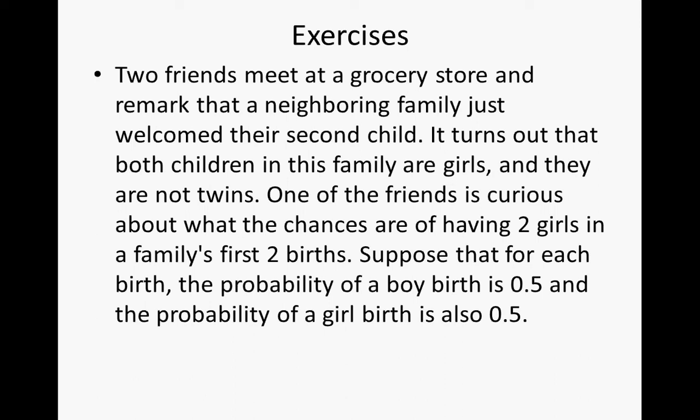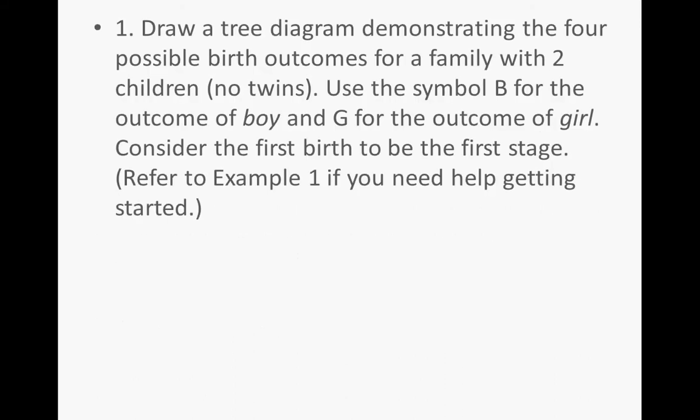Now let's take the exercises. Two friends meet at a grocery store and remark that a neighboring family just welcomed their second child. Both children are girls and they are not twins. One friend is curious about the chances of having two girls in the first two births. Suppose that for each birth, the probability of a boy is 50% and the probability of a girl is also 50%. For number one, draw a tree diagram demonstrating the four possible birth outcomes for a family with two children — no twins. Use B for boy and G for girl, with the first birth as the first stage.